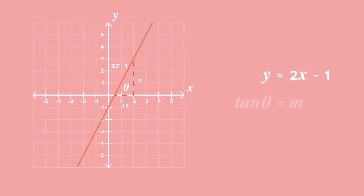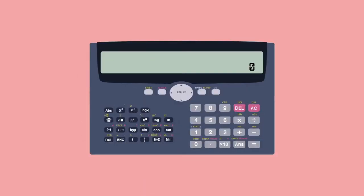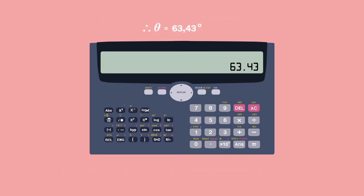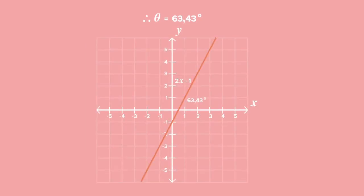We equate tan theta to the gradient of the line, which is 2. The tangent of theta is 2. We need to find the size of theta. Using your calculator, enter second function, tan, and the ratio 2, then press equals. You will get theta equals 63.43 degrees, which is the angle of inclination of the line y equals 2x minus 1.